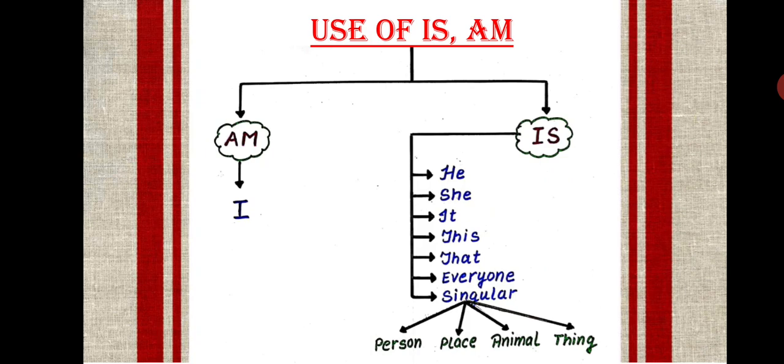For example, let's just understand it with a few examples. I am reading. I am a teacher. I am very tall. I am going to school. In all these sentences, am is accompanying I.